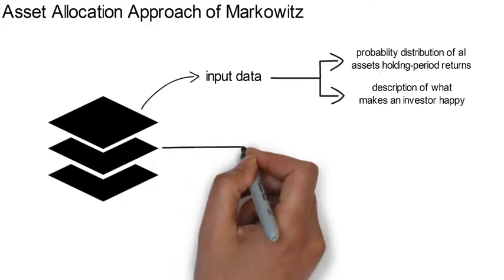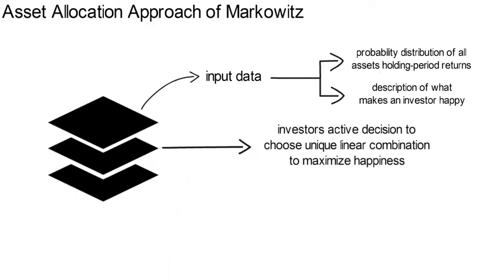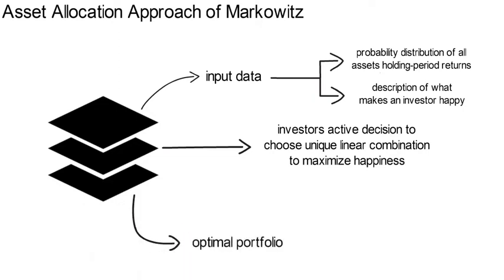The second layer has to do with the investor's active decision to choose among all the assets a unique linear combination which gives the greatest happiness to the investor. And the third layer characterizes the optimal portfolio.